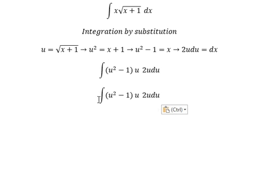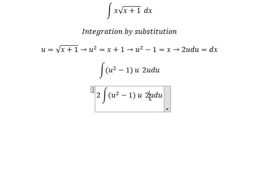So we put number 2 outside. u and u, you get u squared.